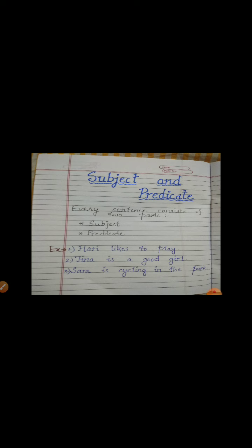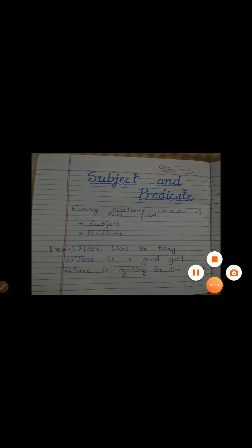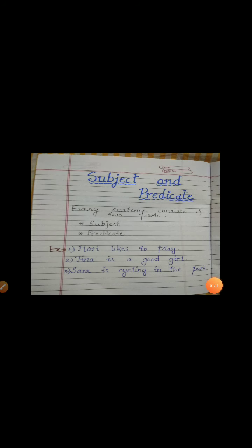The three examples are: Hari likes to play. Tina is a good girl. And third, Sara is cycling in the park. First of all, tell me which are the nouns in these sentences. In the first one, Hari is the noun. In the second one, Tina is a good girl — Tina is the noun. And in the third one, Sara is cycling in the park — the noun is Sara.